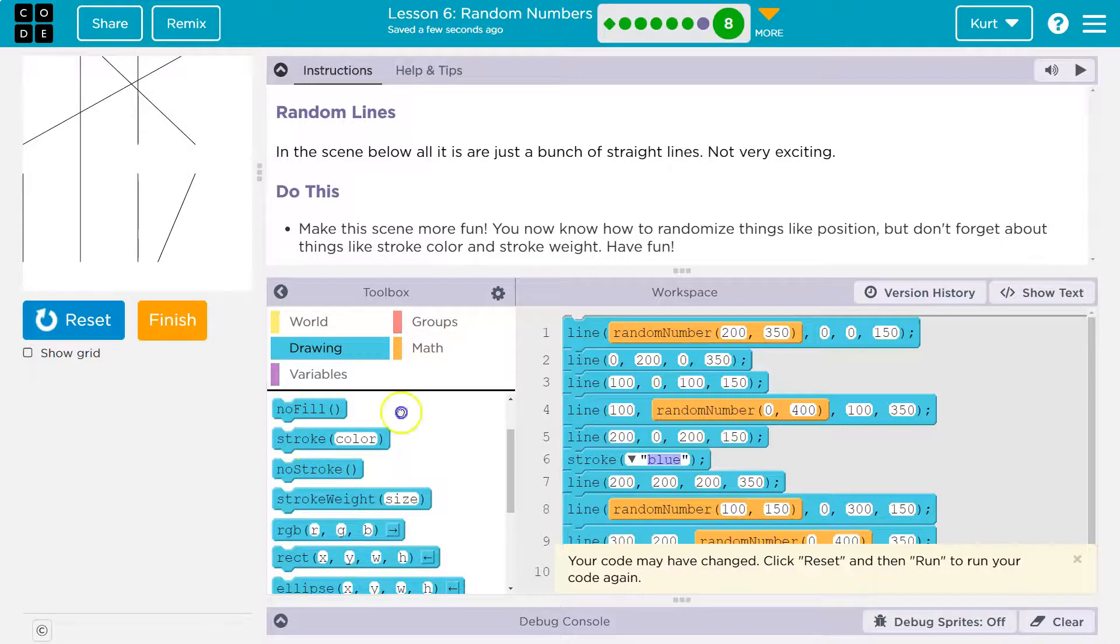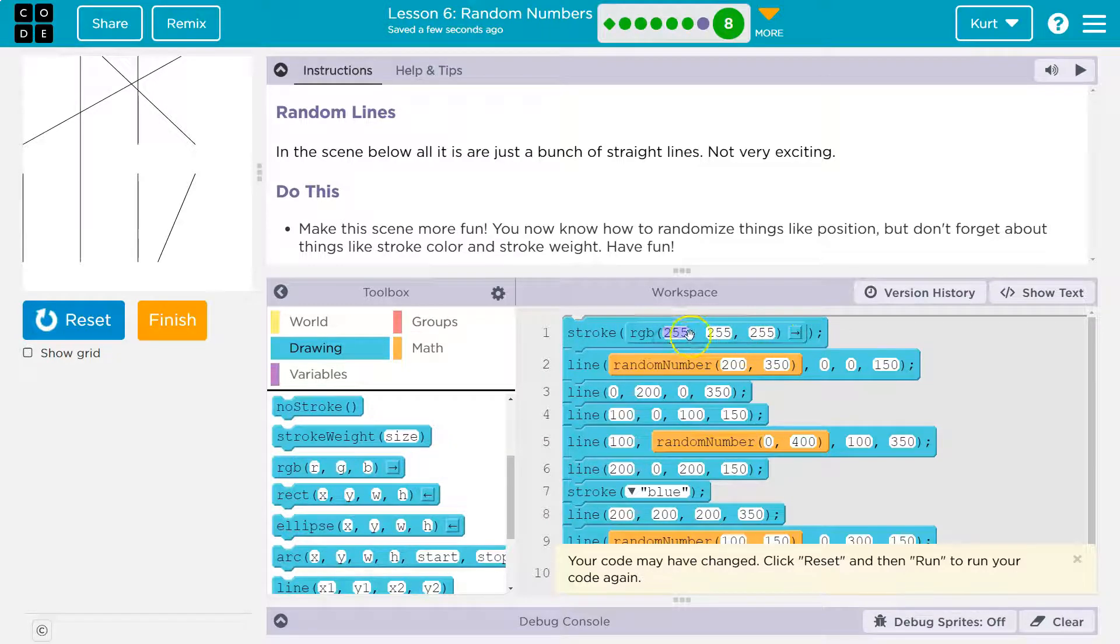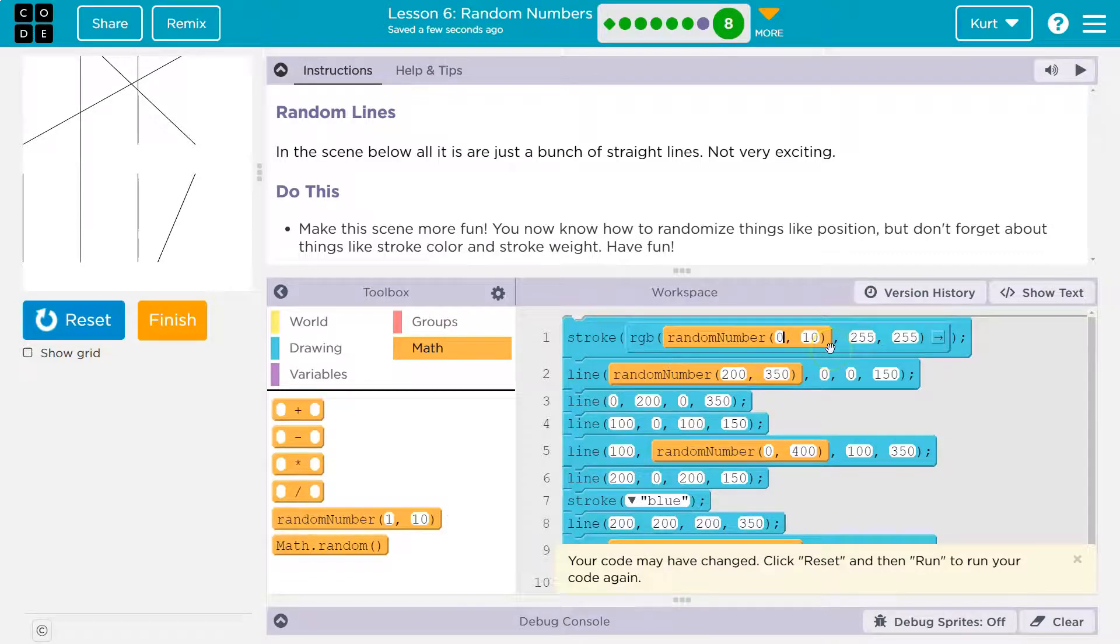Sure, we'll do blue, and then up here we'll do... I want to randomize color, right? And we did this before. So RGB, and then I'm going to do random 0 to 255, remember was the max. And I'm going to randomize this part of it too, 0 to 255.